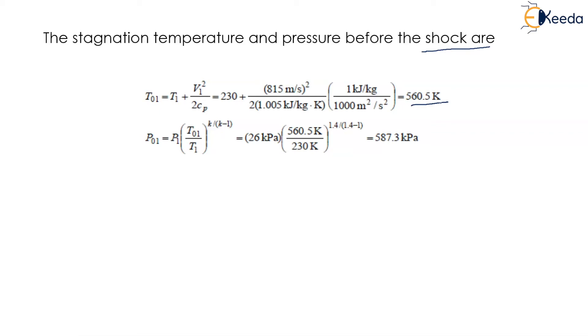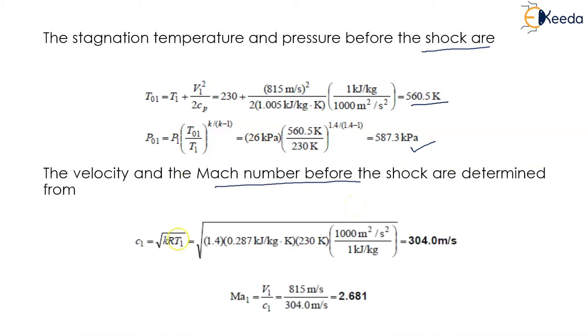The pressure is P01 = P1 × (T01/T1)^(K/(K-1)). After substituting all the values, we get 26 × (560.5/230)^(1.4/0.4) which equals 587.3 kilopascal.